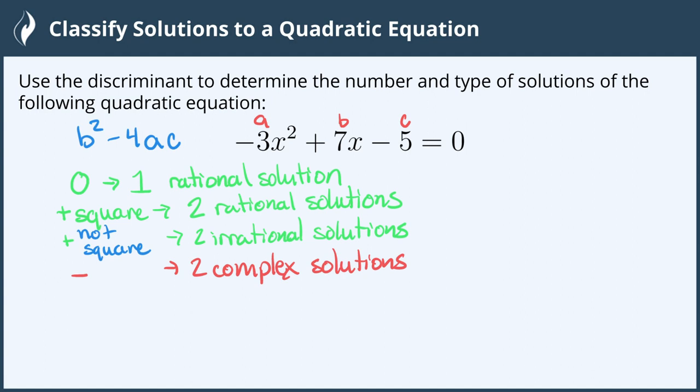So we have b, which is 7, so we'll substitute that into our formula with parentheses. Minus 4, and we're substituting -3 in for a. And then we have c, which is -5.